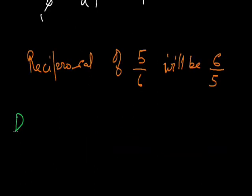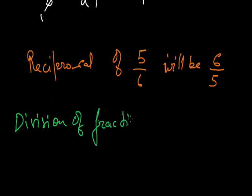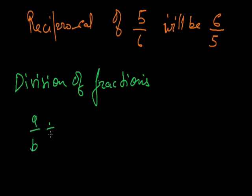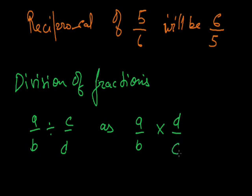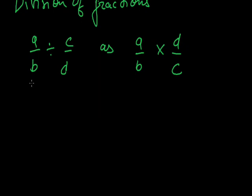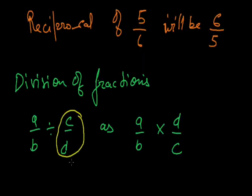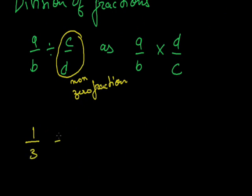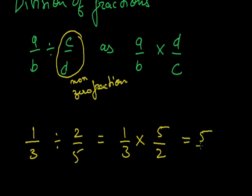Next is division of fractions. Dividing A upon B by C upon D is the same as multiplying A upon B by the reciprocal of C upon D, that is D by C. We take the reciprocal of C by D, that is D by C, and convert the division sign to the multiplication sign. Here you have to remember that C upon D should be a non-zero fraction. Now, if I have to divide 1 by 3 by 2 by 5, I will just write 1 by 3 into the reciprocal of 2 by 5, that will be 5 by 2. So, it will be equal to 5 by 6.